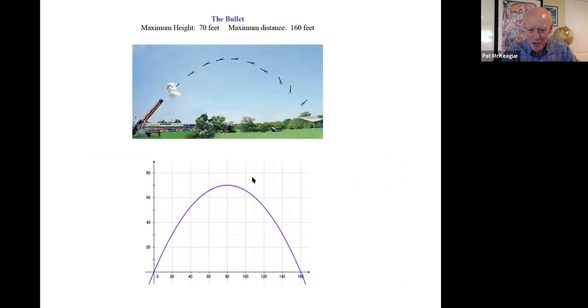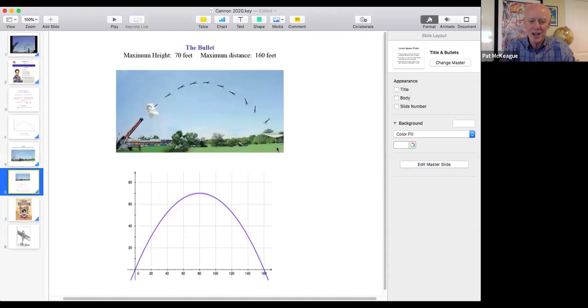And then here's that same picture, and then here's the graph that we got off Desmos. Now it doesn't look like they match, right? So he goes 70 feet in the air here, travels a distance of 160 feet. You can tell the graph is a parabola, but what about this?